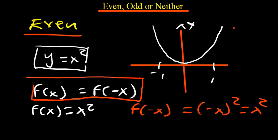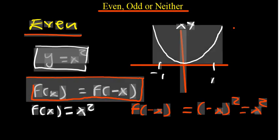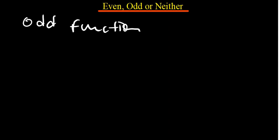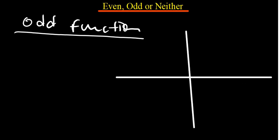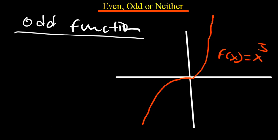Now, what is an odd function? An odd function is unchanged when rotated 180 degrees. A very good example is f(x) = x³. Algebraically, an odd function satisfies the condition: -f(x) = f(-x).